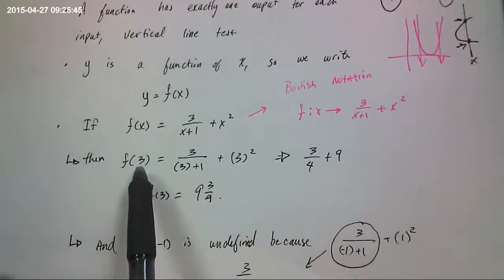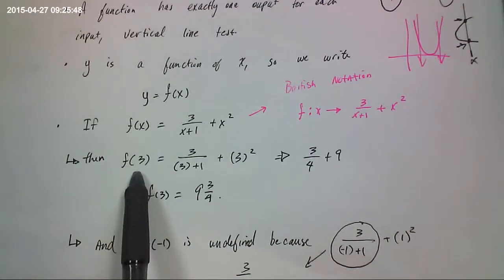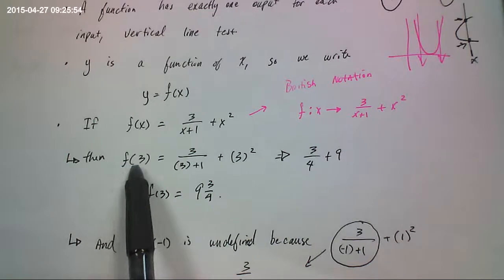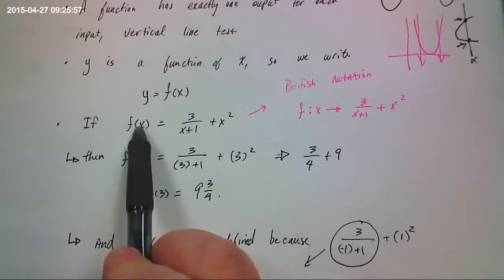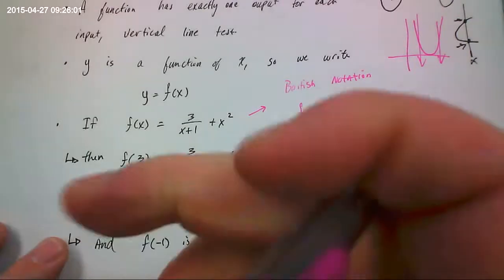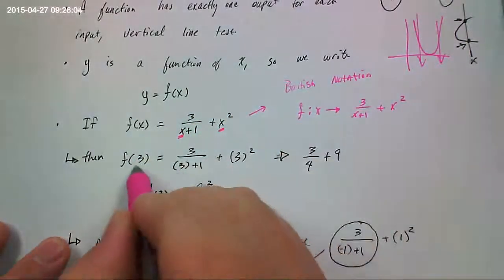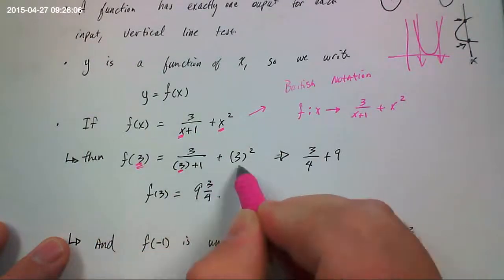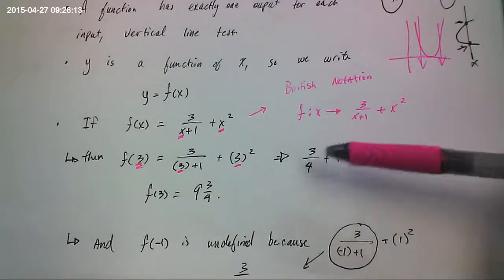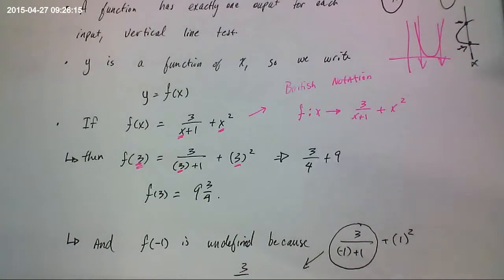If I wanted to see what happens when the function has an input of 3, the instructions would say something like evaluate this. What that means is, for your function, everywhere you see an x, and there are two of them, you put a 3. You put a 3 here, you put a 3 there. Then you just do the arithmetic. Follow the order of operations. 3 plus 1 is 4, so it's 3 fourths plus 3 squared is 9. That would be 9 and 3 fourths. Pretty easy.